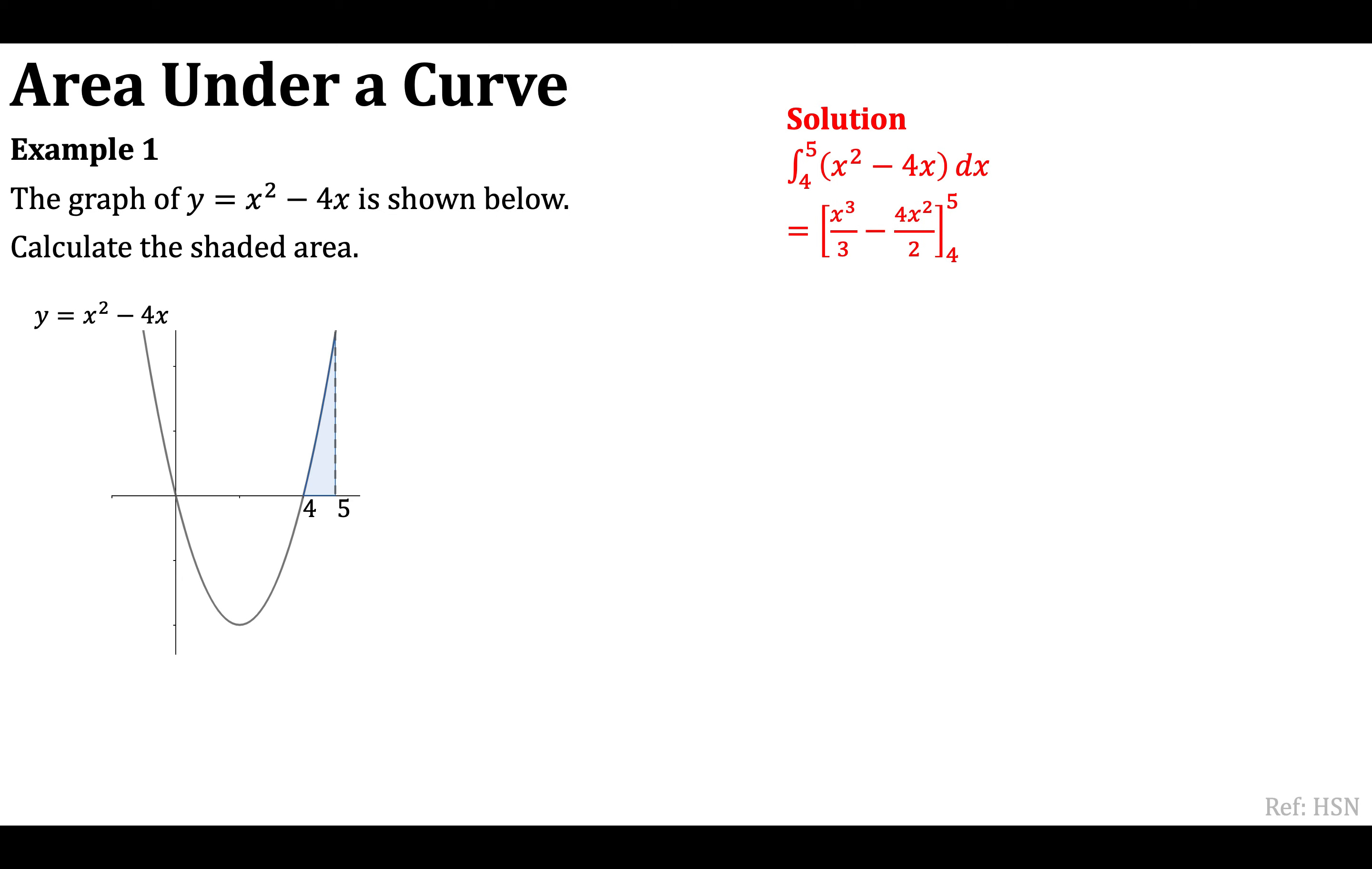So integrating will give me x cubed over 3 minus 4x squared over 2, and my limits were 4 and 5. So firstly I'm going to substitute in 5, but I'm also going to, before I forget, simplify this fraction first. I've got 4x squared over 2, that gives me 2x squared here. So make sure you do that. So substituting in 5 this time, I've got 5 cubed over 3 minus 2 times 5 squared, and then I'm subtracting that same expression with 4 substituted in. So 4 cubed over 3 minus 2 times 4 squared.